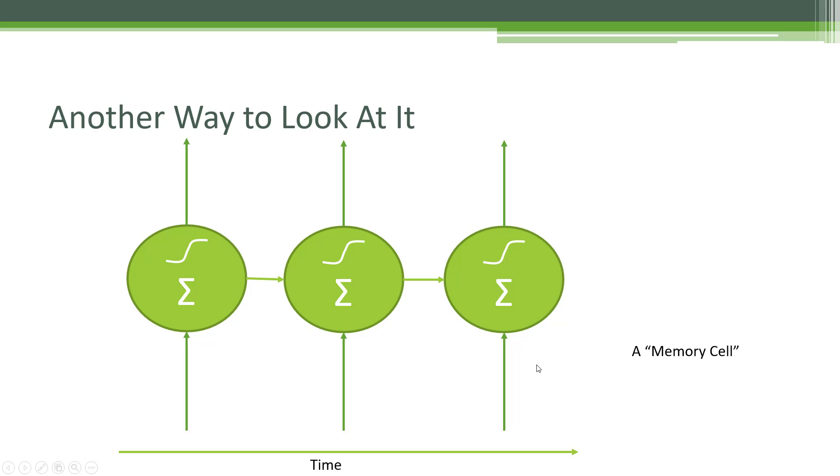Another way of thinking about this is by unrolling it in time. So what this diagram shows is the same single neuron, just at three different time steps. And when you start to dig into the mathematics of how RNNs work, this is a more useful way of thinking about it.